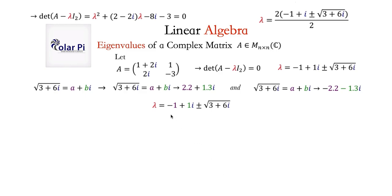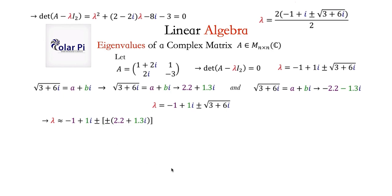So lambda, which we had as minus 1 plus i plus or minus the square root of 3 plus 6i, is now — replacing the square root with plus or minus (2.2 plus 1.3i). Plus or minus followed by another plus or minus just ends up being a single plus or minus. Think about why, but if you need help you can ask. So our lambdas are going to be minus 1 plus i plus or minus what's in the parentheses.